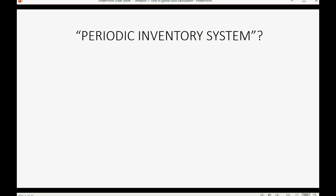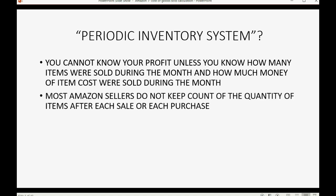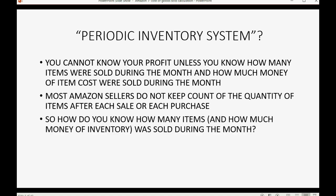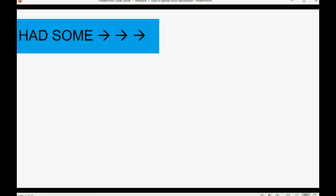What is the periodic inventory system? You cannot know your profit unless you know how many items were sold during the month and how much money of item costs were sold — in other words, how much you paid specifically for the products you gave the customers. Most Amazon sellers do not keep count of quantities after each sale or purchase, so the solution is to use elementary steps to back into the amount of cost of goods sold during the month.